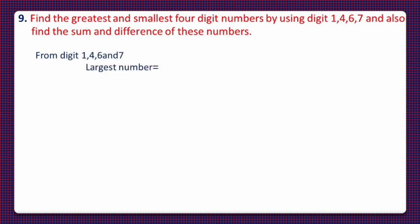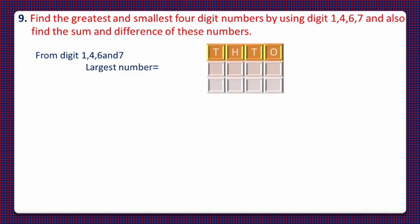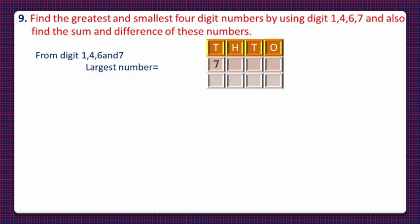Let's make the greatest four-digit number using the digits 1, 4, 6, and 7. For that, let's consider the place value chart up to 1000. We'll write the digits in descending order: 7 will come in the thousands place, 6 at hundreds, 4 in tens, and 1 in ones column to make the greatest number 7641.